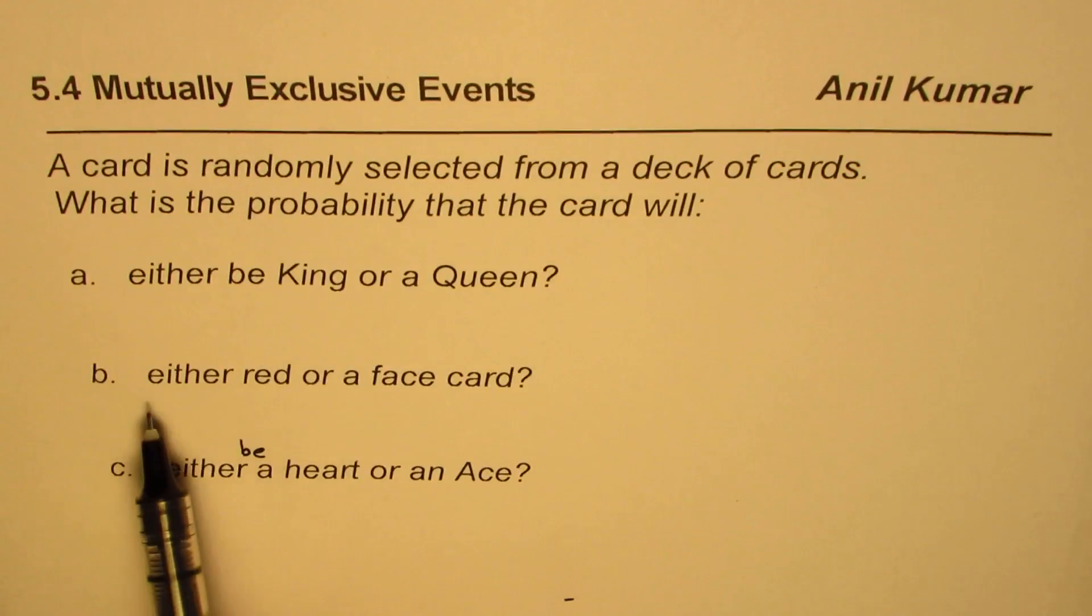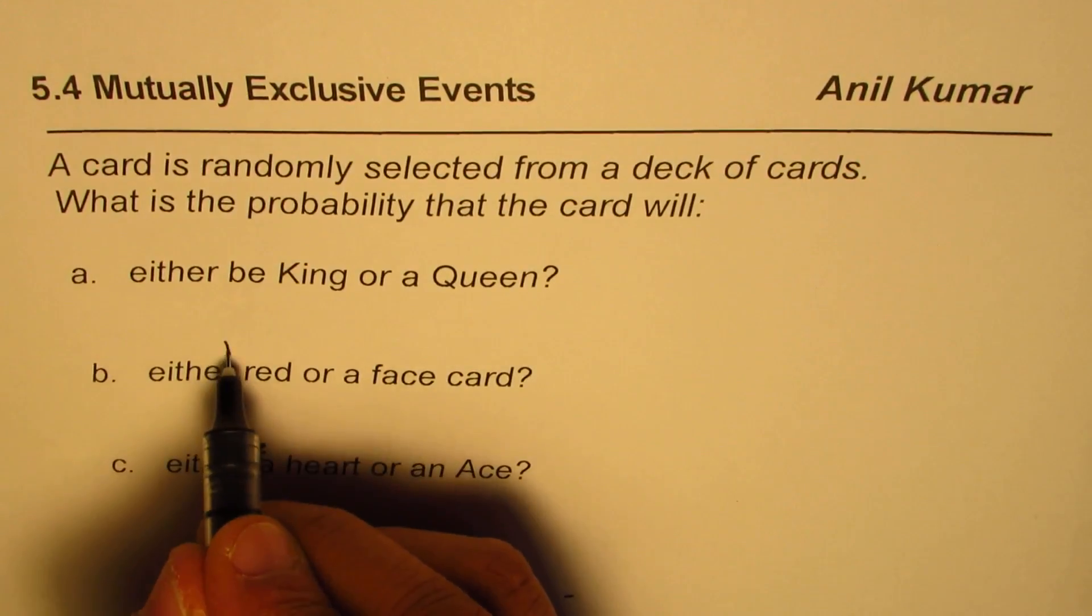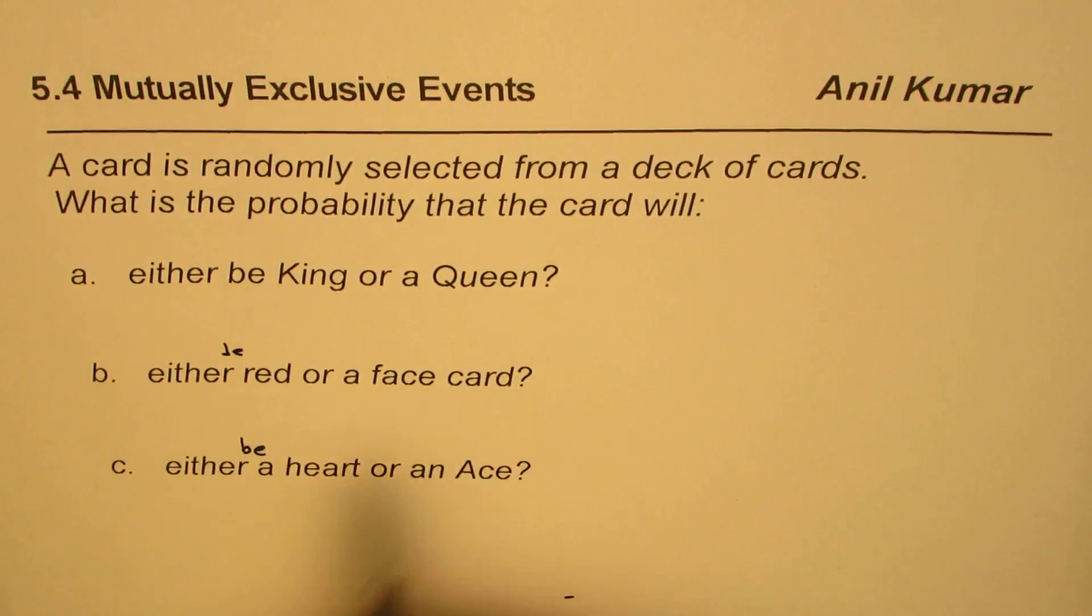Either be red or a face card, or either be a heart or an ace. These are the three questions for you. First, we should understand whether these events are mutually exclusive or not, and then we can apply the rules and find the theoretical probability for them.